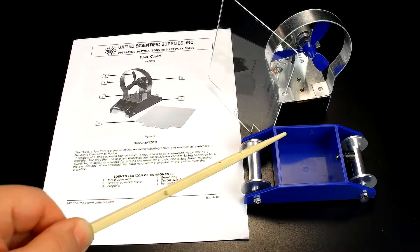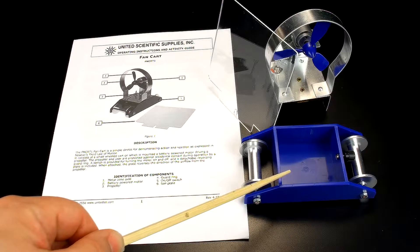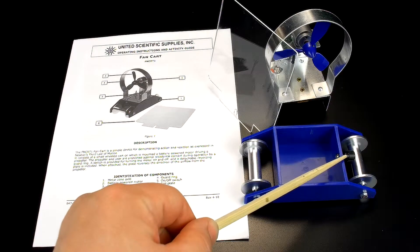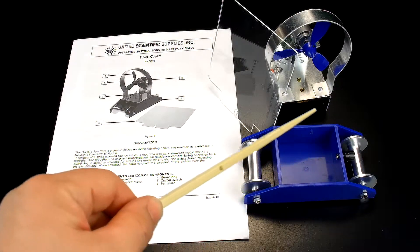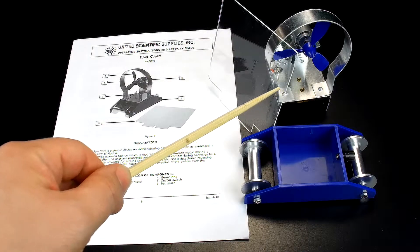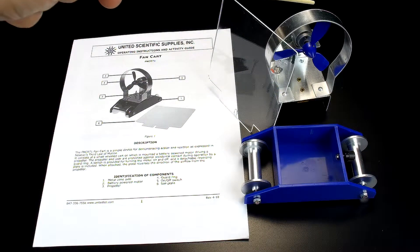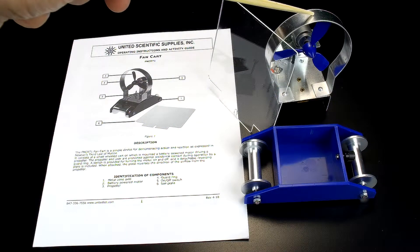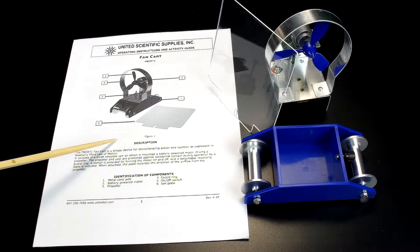The apparatus includes a modified Halls carriage that has a bolt to attach a sail to, a plastic sail, a motor, fan, and fan guard assembly, as well as an instruction guide.